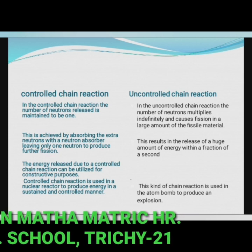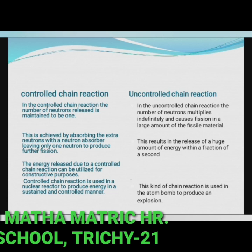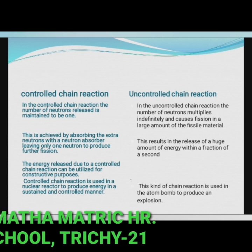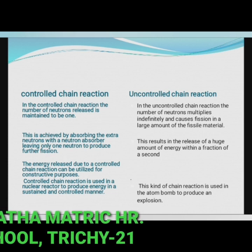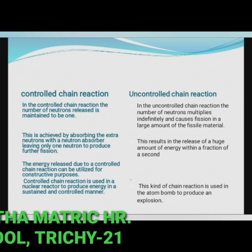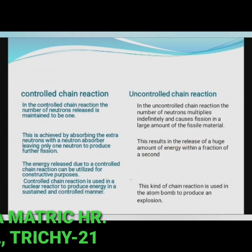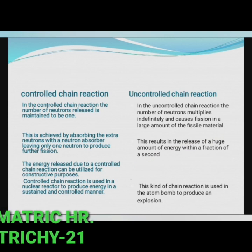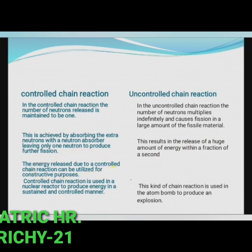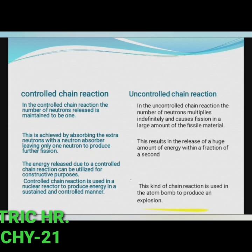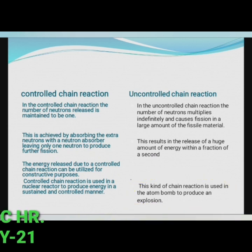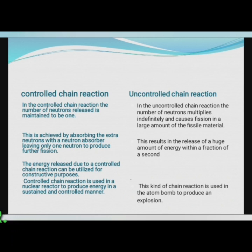In an uncontrolled chain reaction, a huge amount of energy is released within a fraction of a second. The energy released due to a controlled chain reaction can be utilized for constructive purposes, whereas the uncontrolled chain reaction is used in the atom bomb to produce an explosion. These are the main differences between controlled and uncontrolled chain reactions.